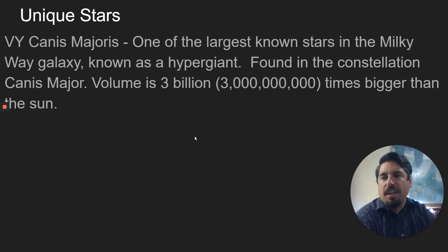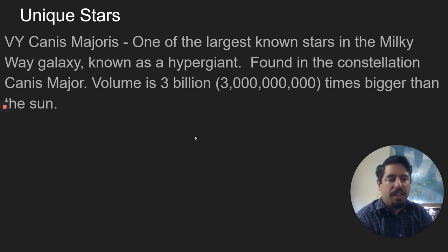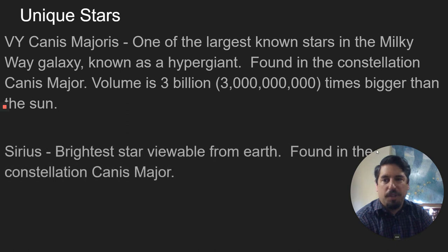Now I want to talk about some unique stars. VY Canis Major is one of the largest stars in our galaxy. It's not just a supergiant — it is a hypergiant. It's found in the constellation Canis Major and it is 3 billion times bigger than the sun. This is the largest star we have found in our neighborhood of the Milky Way galaxy. VY Canis Major is the largest one in the Milky Way — know that one, it's an important one.